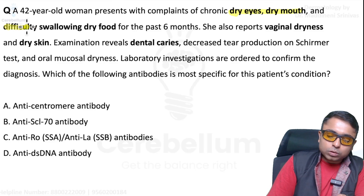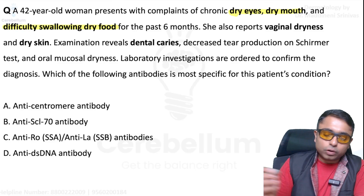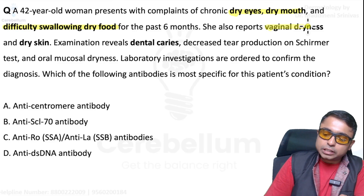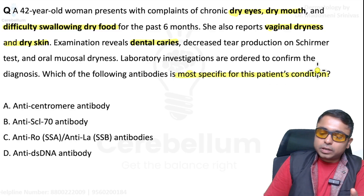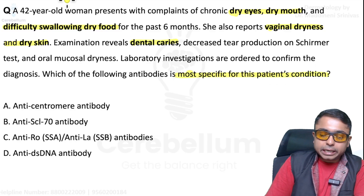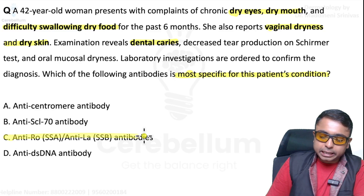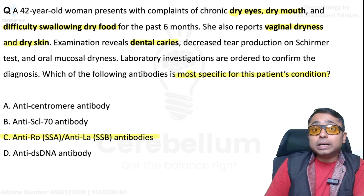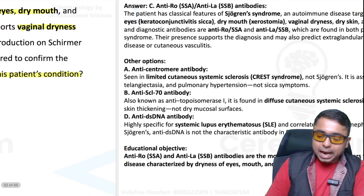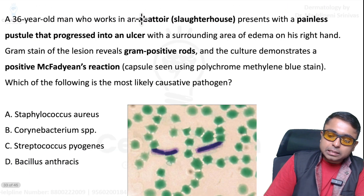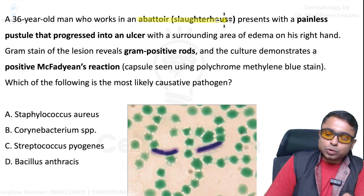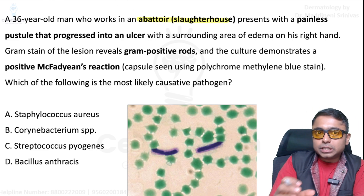Next question: dry eyes, dry mouth, difficulty with dry food, vaginal dryness, dental caries — dryness everywhere. The most specific finding for this patient's condition — I hope all of you know this is Sjögren's syndrome. The answer is anti-Ro/La antibodies.